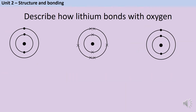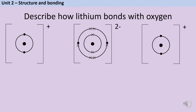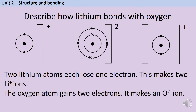Sometimes the number of electrons an atom needs to gain and the number it needs to lose don't quite tally up. When lithium bonds with oxygen, a lithium atom can only lose one electron, but the oxygen atom needs to gain two. The solution is to have two lithium atoms each losing one electron. The oxide ion still has a two minus charge because it's gained two electrons — one from each lithium atom — and the lithium ions both still have a single positive charge. So: two lithium atoms each lose one electron, making two Li⁺ ions, and an oxygen atom gains two electrons to make an O²⁻ ion.